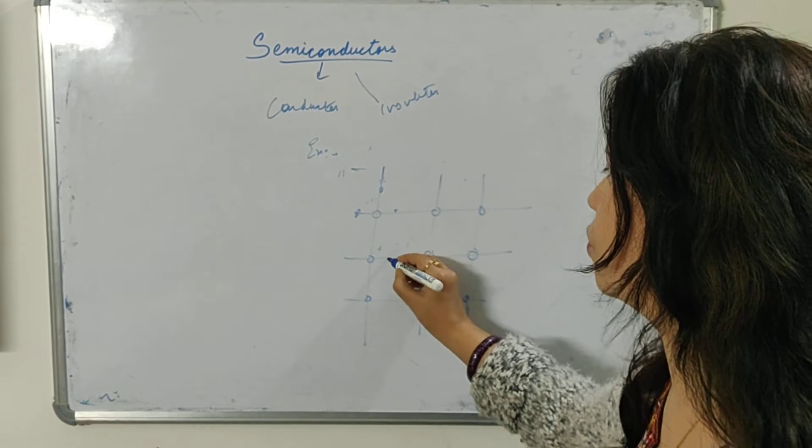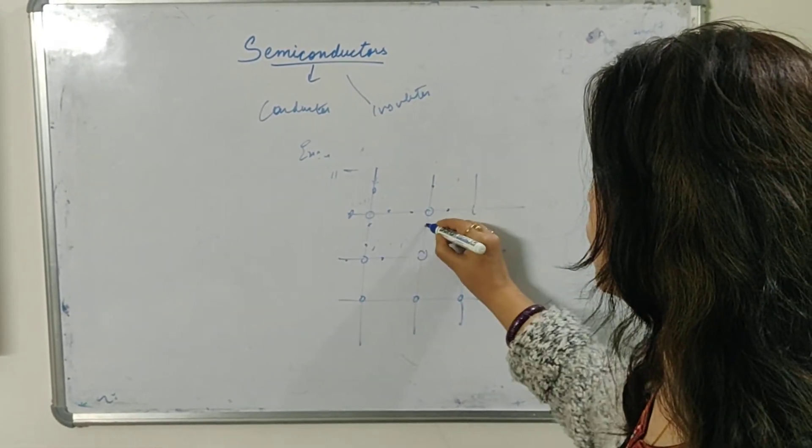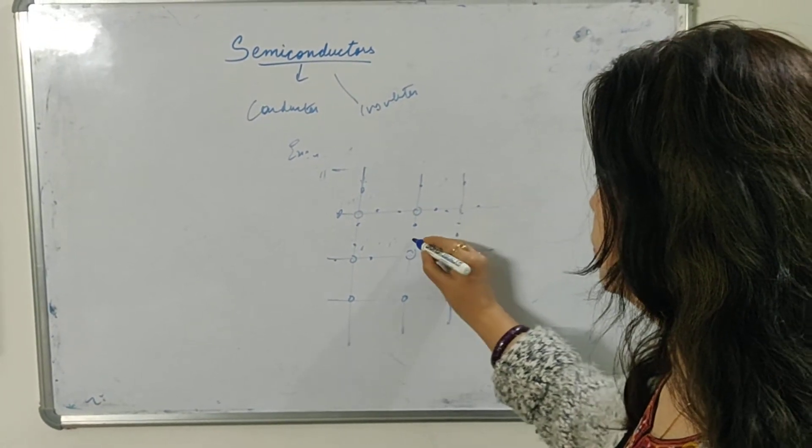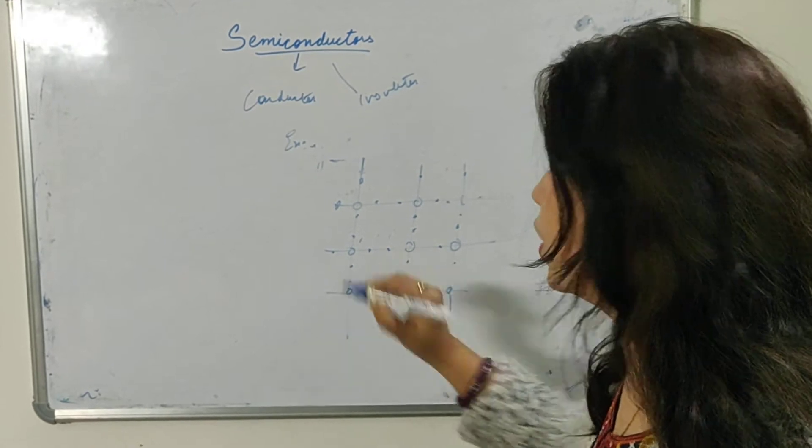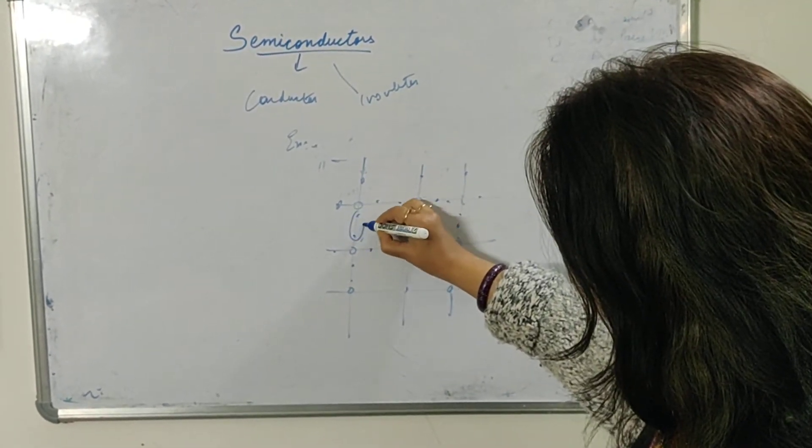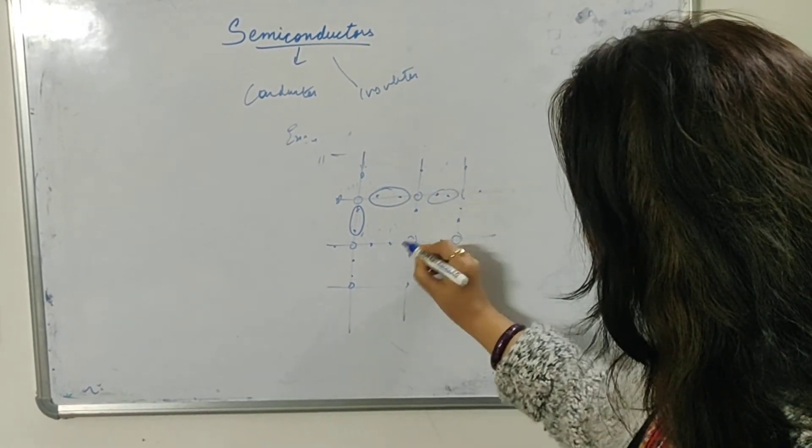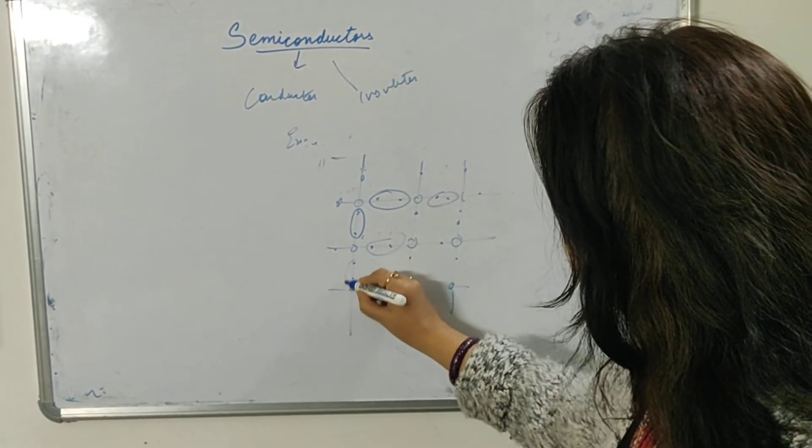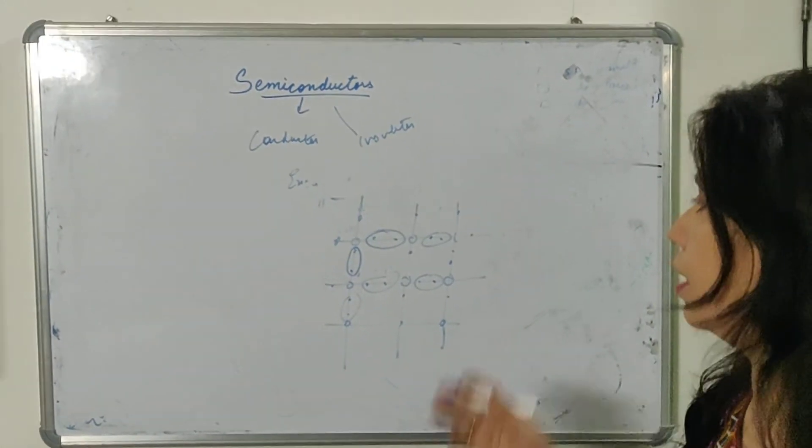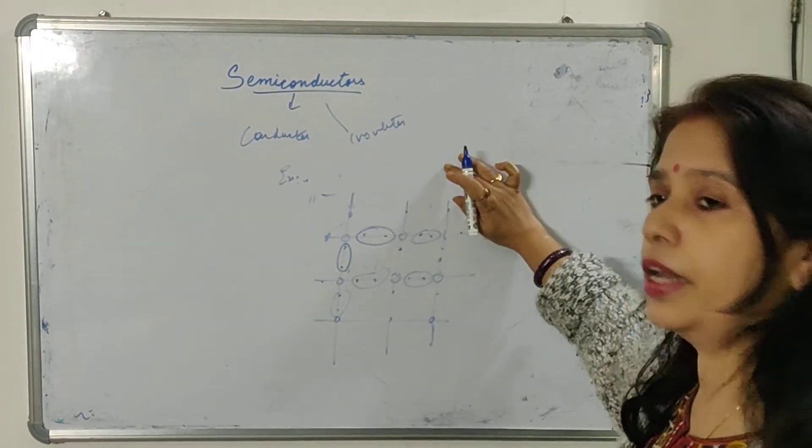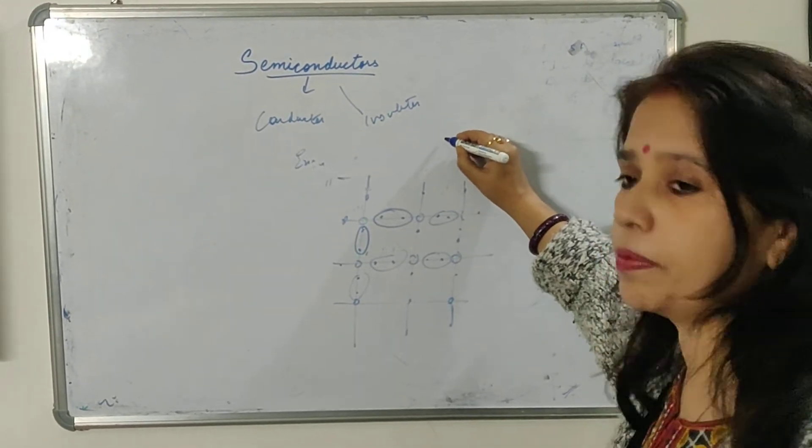These are the atoms arranged over here. We have just now seen that there are 4 electrons in the outermost orbit. So everywhere there are 4. We can see here that these 2 electrons can share and form a covalent bond. Everywhere you can see that the covalent bonds are formed.